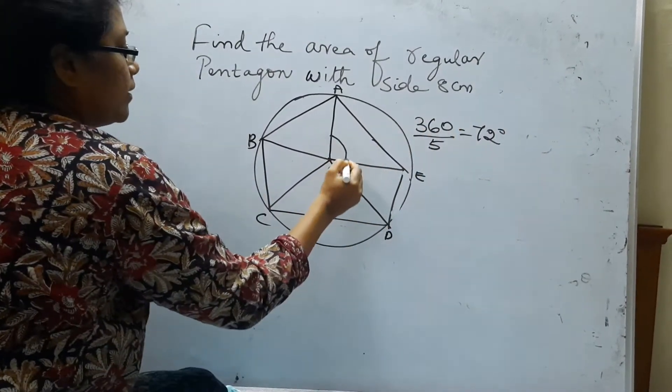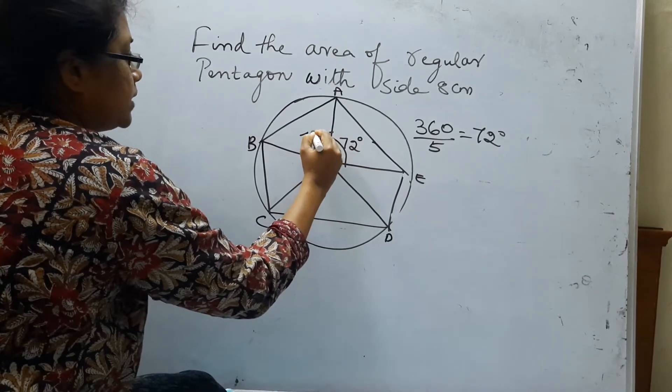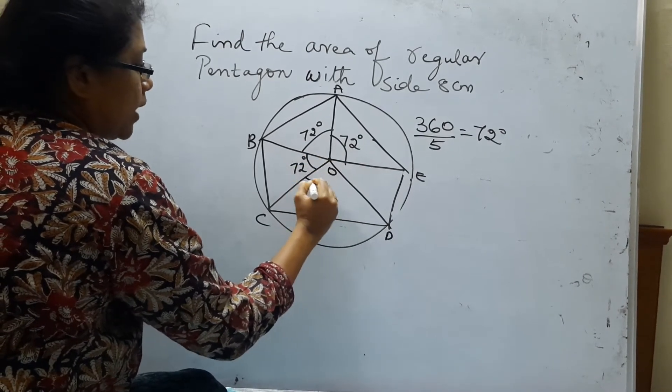So every angle is 72. In a hexagon every angle is 60 degrees because 360 divided by 6 is 60. So here every angle is 72.